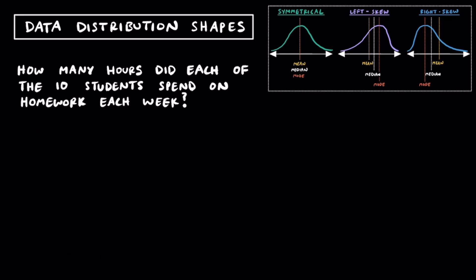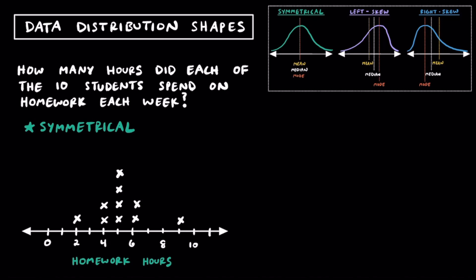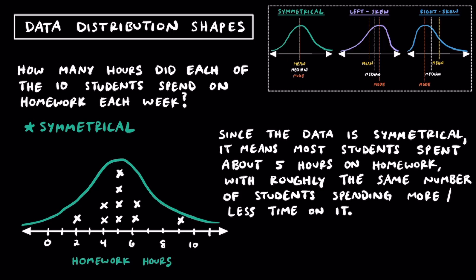Here's one final question: how many hours did each of the 10 students spend on homework each week? If we're told the shape of this data is going to be symmetrical, let's draw a dot plot to represent it. A reasonable range is 0 to 10 hours, labeled 'homework hours.' With 10 different students, let's put down 10 X's, placing most in the middle with less and less as we go out towards the sides. Drawing a smooth curve, we can see this is indeed a symmetrical shape. We can conclude that most students spend about 5 hours on homework, with roughly the same number spending more and less time than 5 hours.